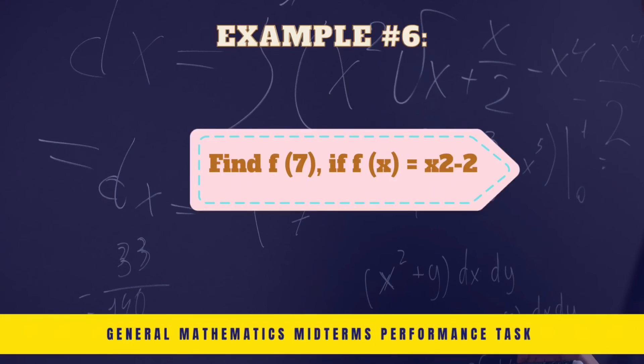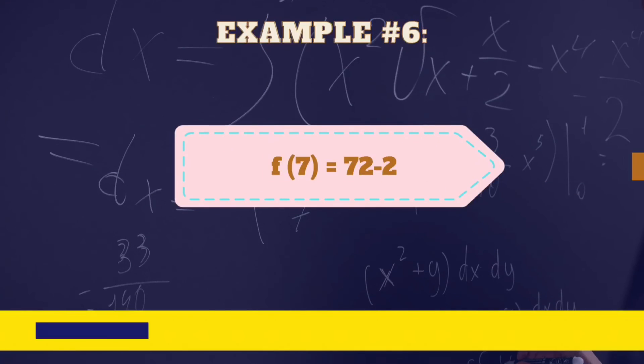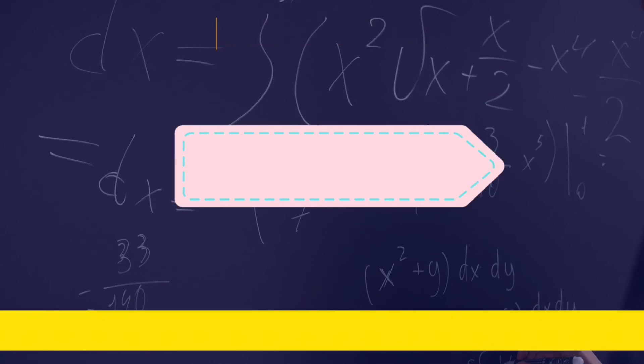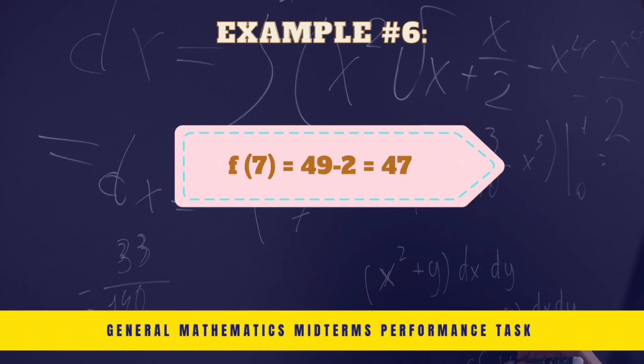For our 6th and last example, let's find f(7) if f(x) equals square root of x squared minus 2. Again, we substitute x with 7 since it's our given numerical value. So it becomes a square root of 7 squared minus 2. 7 squared is 49 subtracted by 2. So our answer becomes square root of 47.